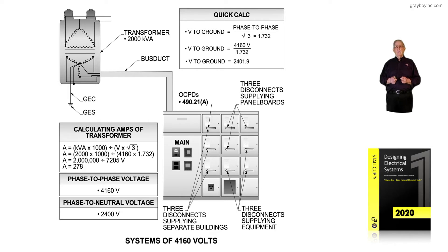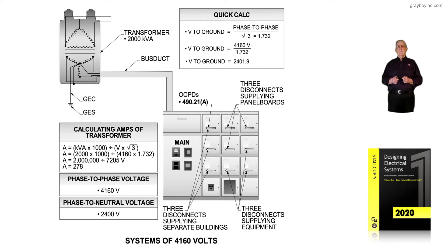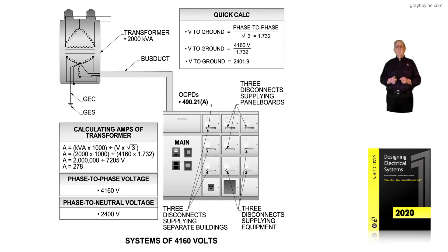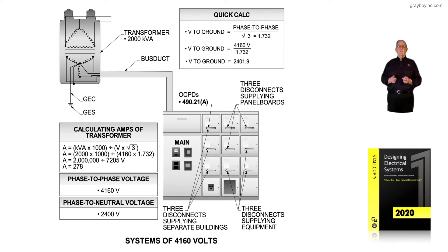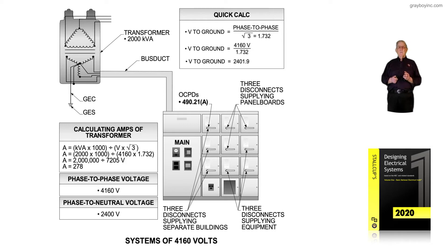The voltage to ground is obtained by taking the phase-to-phase voltage of 4160, divided by the square root of 3, because it's a three-phase system. That gives us 2401.9 volts, but the industry rounds that down to 2400 volts. So they call it a 4160/2400, three-phase, four-wire system, and the voltage to ground is 2400 volts.